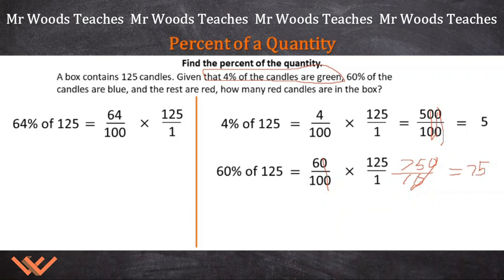Let's clean that up a little bit. Now we know that 60% of the candles are blue. That means that there's 75 of them.